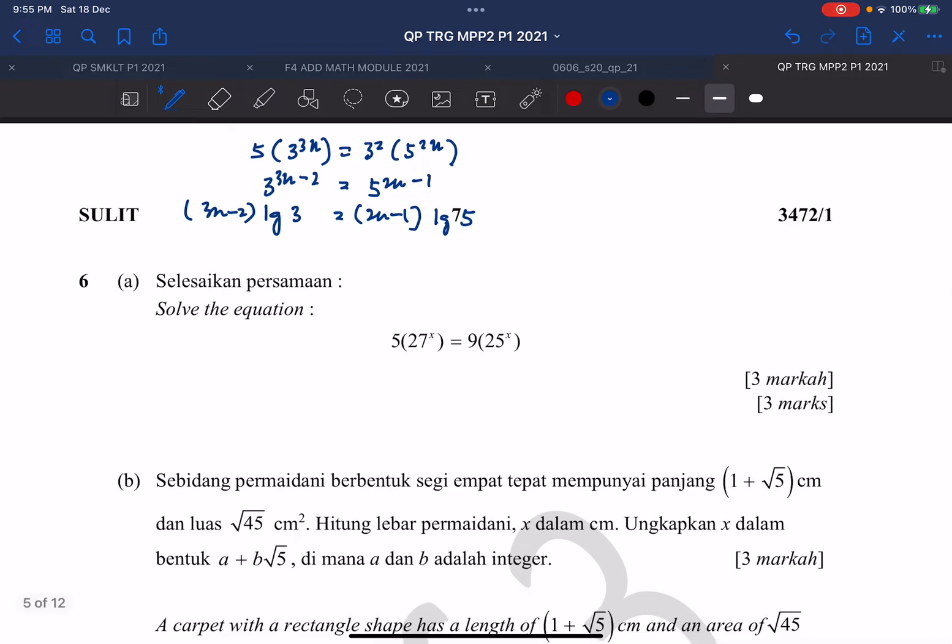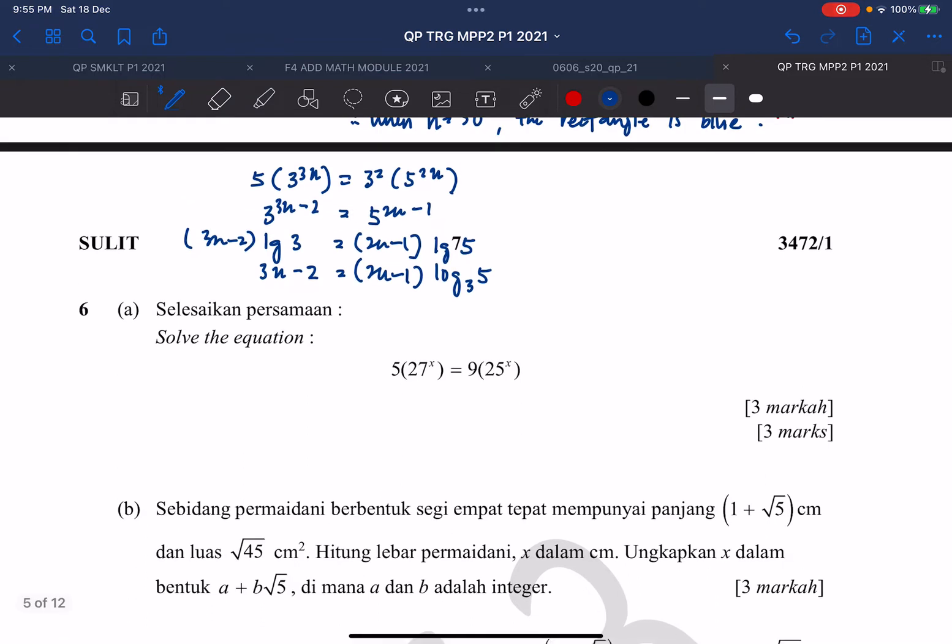Then I will move my log 10, 3 to the right-hand side. So 2x minus 1, log 10, 5 divided by log 10, 3. So I will start to expand. So 3x minus 2, log 3, 5.